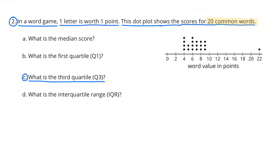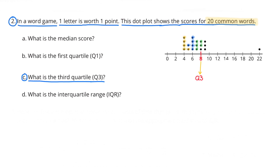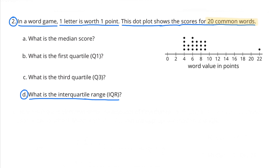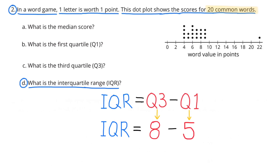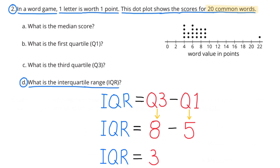Part C: what is the third quartile, or Q3? The third quartile is 8. Number four: what is the interquartile range, or IQR? The IQR is equal to quartile number three minus quartile number one. Since Q3's value was 8 and Q1 had a value of 5, it's as simple as 8 minus 5. The interquartile range, or IQR, is 3.